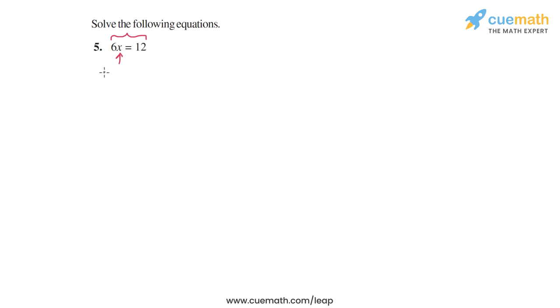What we need to do is we need to separate the variable x and find its value, and to do that we can divide both the LHS and the RHS by 6 because that will remove this 6 from the LHS. So let's divide both sides of this equation by 6.